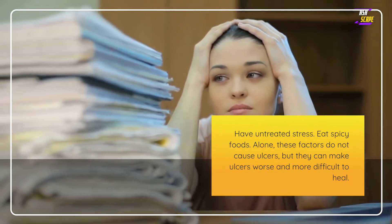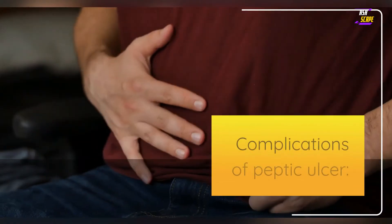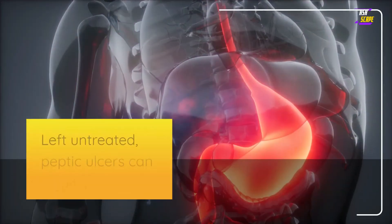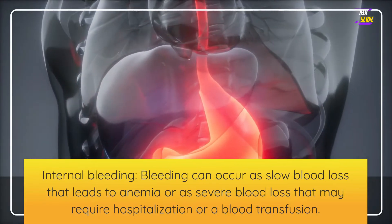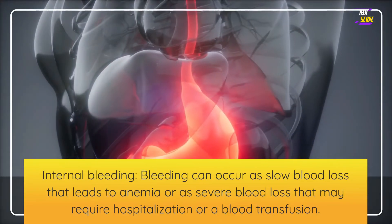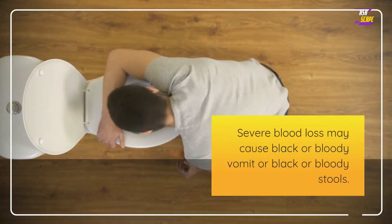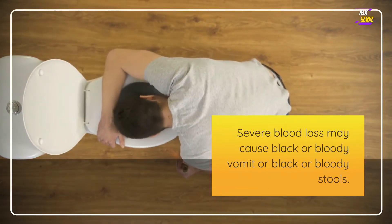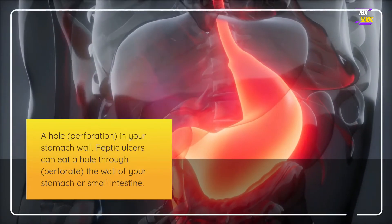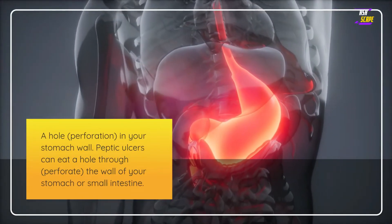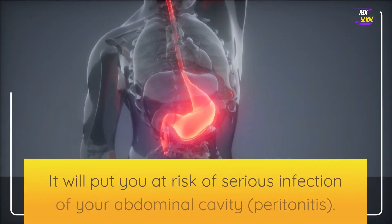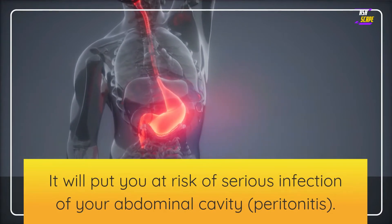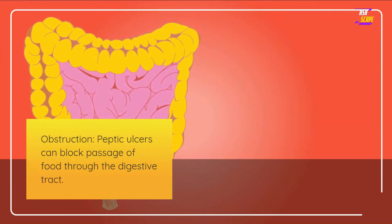Complications of peptic ulcer: left untreated, peptic ulcers can result in internal bleeding. Bleeding can occur as slow blood loss that leads to anemia, or as severe blood loss that may require hospitalization or a blood transfusion. Severe blood loss may cause black or bloody vomit or stools. Additionally, peptic ulcers can eat a hole — a perforation — through the wall of your stomach or small intestine, putting you at risk of serious infection of your abdominal cavity (peritonitis).